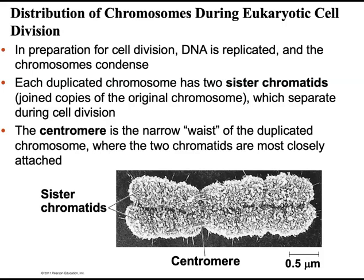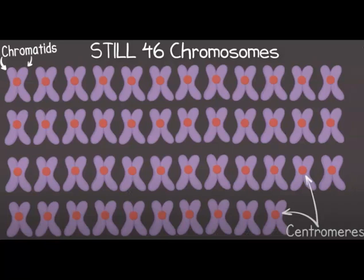Notice the terminology: two sister chromatids, which are identical strands of DNA condensed with the help of proteins and held together by the centromere, are considered one chromosome. These two sister chromatids are what separate during cell division to ensure that each new cell has one copy of each of the 46 chromatids.